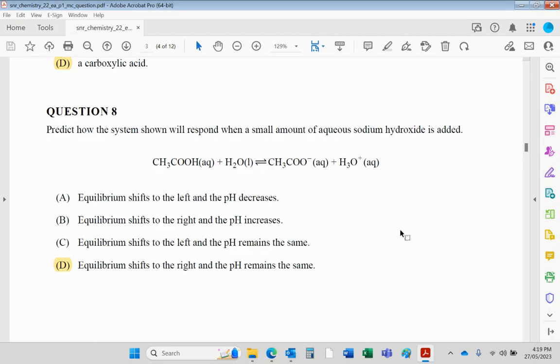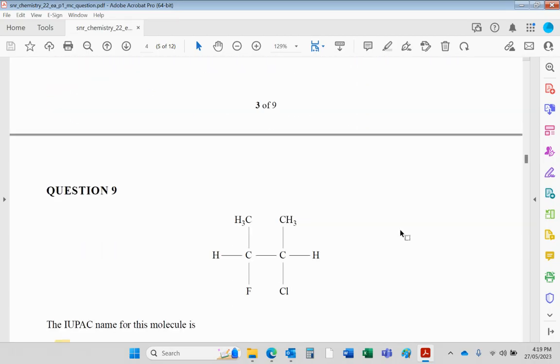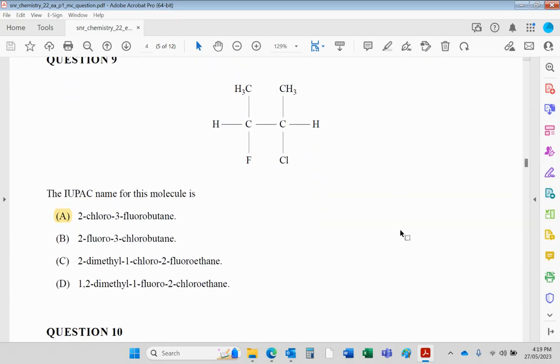Question nine: naming a compound. First of all, count the longest chain—four carbons, that means it's a butane. It's got a chlorine and a fluorine on carbons two and three. If you want to go alphabetical, we might as well go numerically in the same order, so it would be 2-chloro-3-fluorobutane.